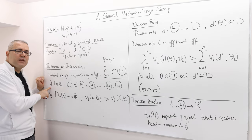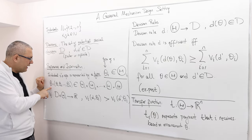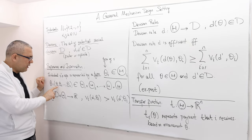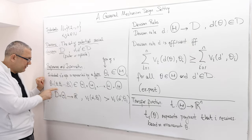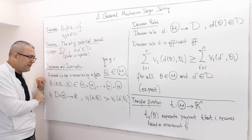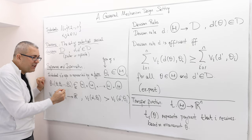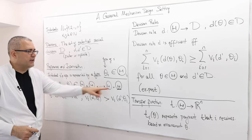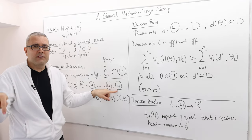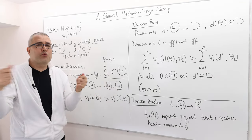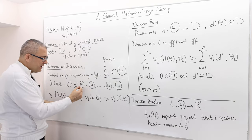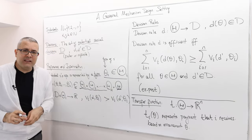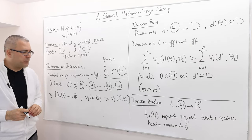Small theta i is just one possible type of individual i. Theta without the subscript i is basically a profile of types: theta one, theta two, up to theta N — a vector of N dimensions. It's an element of capital Theta, which, dropping the subscript i, means the profile of types — nothing but the Cartesian product of all N individuals' type spaces.